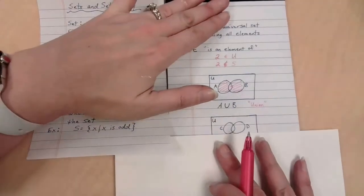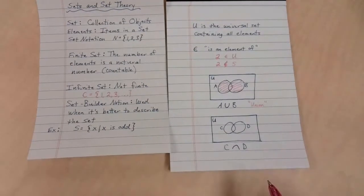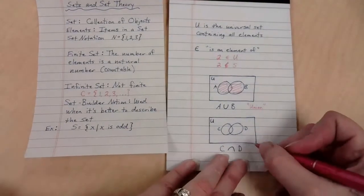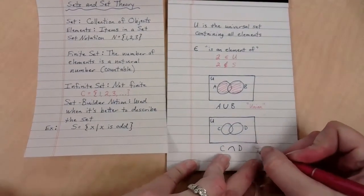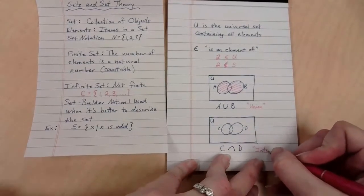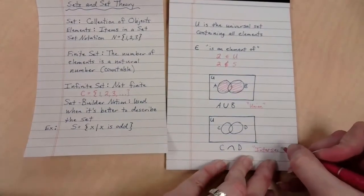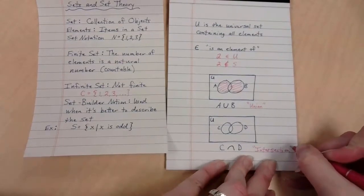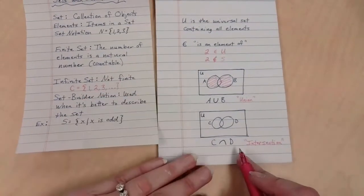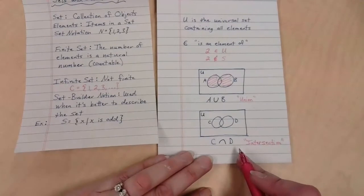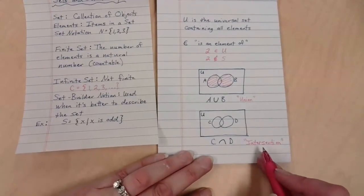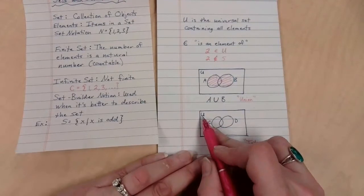As opposed to, if I've got an upside down U thing, which is actually intersection. So this is the intersection of sets C and D. And this is going to be not uniting everything, just saying, hey, where do they cross each other? Well, again, if this is union, hello, sorry, that's the universal set.